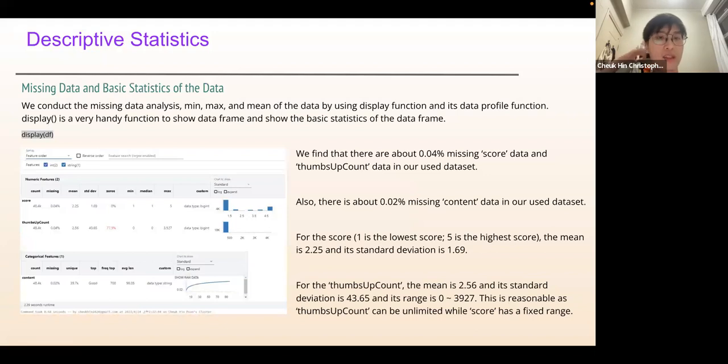We do the missing data analysis to know the mean, max, and min of the data. We find about 0.04% missing score data and thumbs up count data in our user dataset. Also there's about 0.02% same content data. For score we find that 1 is the lowest score, 5 is the highest score. The mean is 1.25 and the standard deviation is about 1.69. For the thumbs up count, the mean is about 2.56 and the standard deviation is about 43.65 and its range is about 0 to 3,927. This is reasonable because thumbs up count can be unlimited while the score has a fixed range set by the Google Play Store review system.